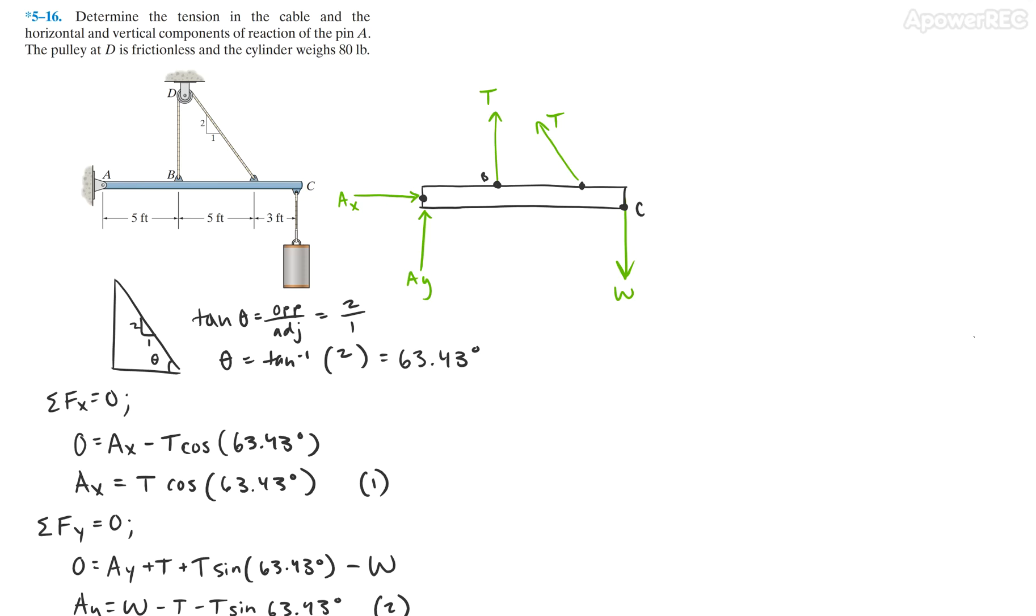Hi guys! Today we're going to go over problem 5.16. It's asking us to find the tension in the cable and the horizontal and vertical components of the reaction at pin A. It also tells us that the pulley is frictionless at D and the cylinder weighs 80 pounds.